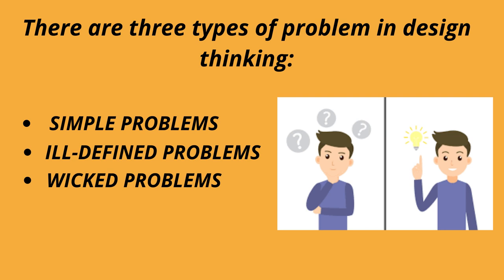For example, if you are dealing with a wicked problem, it's not possible to find a solution right away. You need months of research, prototyping, testing and iteration. There are three types of problems in Design Thinking: simple problems, ill-defined problems, and wicked problems.